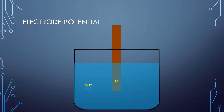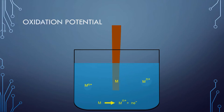The second possibility is that the metal atoms of the metal rod may lose electrons and change into metal ions. This happens only if the metal has a relative tendency to lose electrons, or in other words the electrode has a higher potential to get oxidized — simply, it has an oxidation potential. When this happens, electrons accumulate on the metal rod, which develops a negative charge. This in turn attracts metal ions from the solution, which may change into metal atoms, and ultimately an equilibrium is reached.